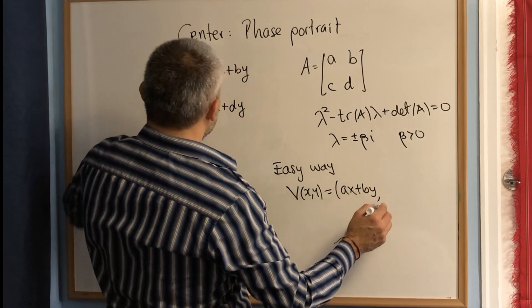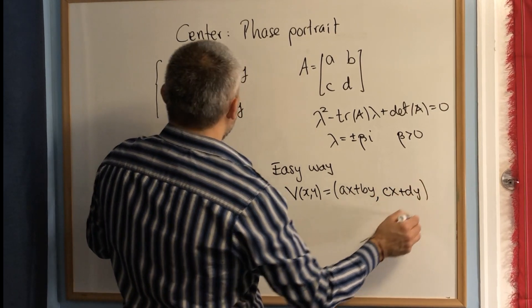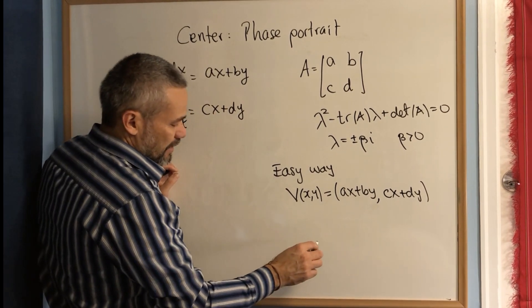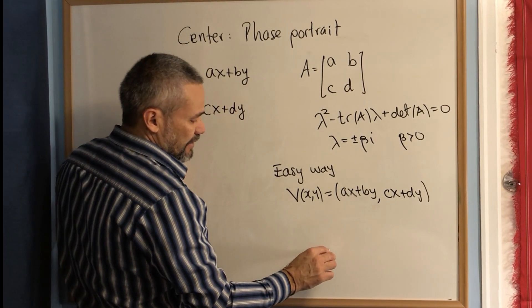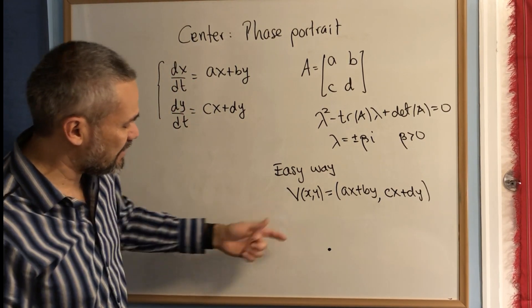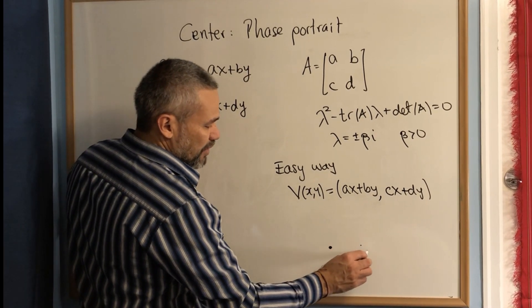Then what we do is, we know that the orbits look like they have the shape of an ellipse—not exactly an ellipse, but they look like an ellipse. Then what we do is pick this point, the point (1,0).